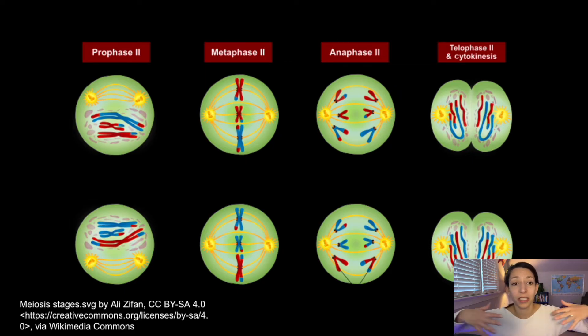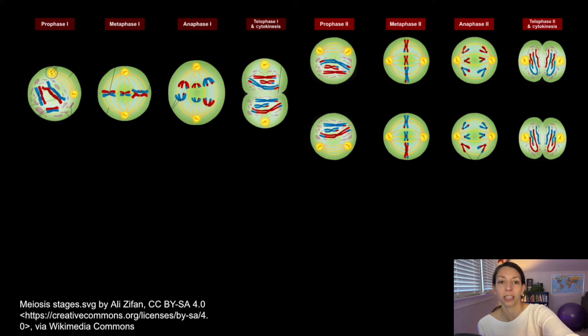And then in anaphase 2, sister chromatids are being pulled apart to opposite ends of the cell. And then in telophase 2, we have our genetic information fully separated, a nuclear envelope starts to form again. And then we're going to have cytokinesis when that actual split occurs, resulting in four daughter cells with half the genetic information of the original parent and different combinations of those genes as well.